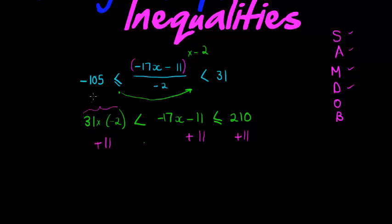Okay, so negative 31 times negative 2, this would have been, I didn't calculate it, but it would have been negative 62. Negative 62 plus 11 gives me 51, so I get negative 51 is smaller than negative 17x is smaller than or equal to 210, that gives me 221.